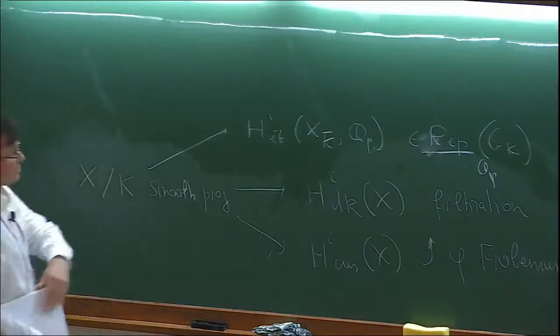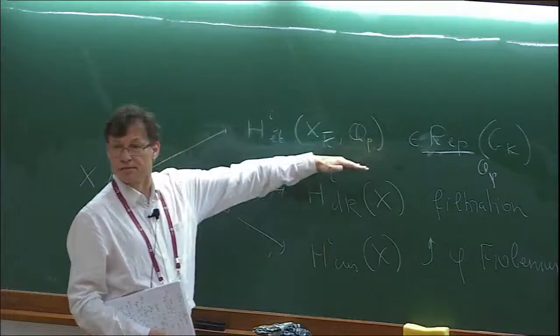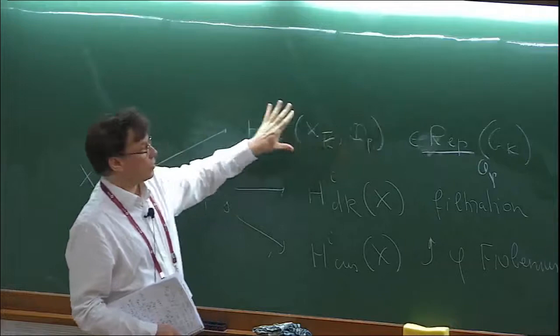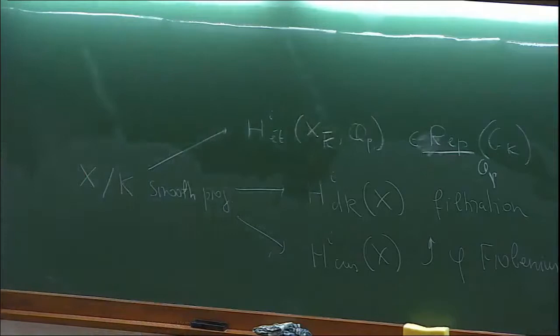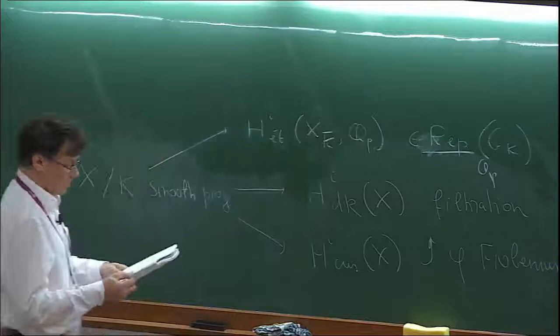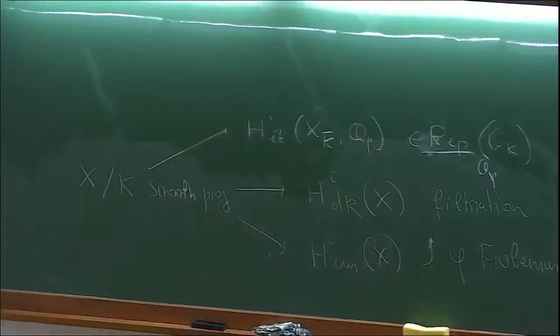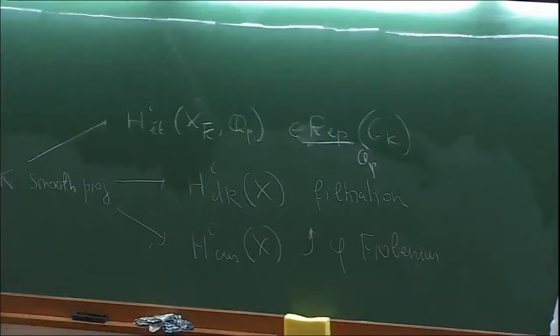At the same time, Tate asked if these Galois representations have some particular properties — in particular, if there exists a p-adic analog of a Hodge decomposition for these objects. And this gives some motivation for what kind of objects can appear here. Now I'll briefly recall some general principles of Fontaine's construction and approach.